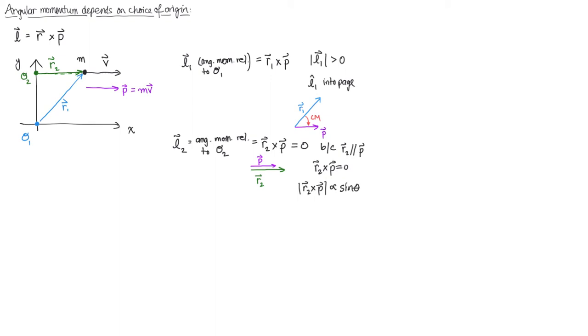So that's the main idea. The question, does this particle have an angular momentum? The answer is, well, it depends. Relative to some origins, yes, this particle will have angular momentum. Relative to other origins, no, the particle will have zero angular momentum.